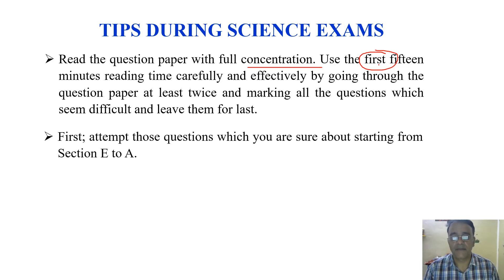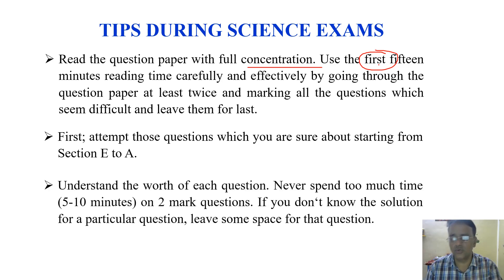First attempt those questions which you're sure about, starting from E to A, or you can mix up D, E, then C, B, A. But one thing you have to concentrate on is that whatever section you're starting, please try to follow the sequence. For example, two mark questions—six questions are there, so 21 to 26—don't jumble them. Suppose you're not able to do question 23, leave some space and move toward the other questions. Some students find case study questions very difficult, so you can leave case study questions to attempt later, before the one mark questions. You can start from Section D. Now you have to understand the worth of each question. Never spend too much time on, say, two marks questions—don't spend five to ten minutes. If you don't know the solution for a particular question, leave some space and move on to the next question.